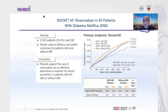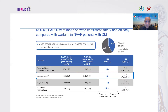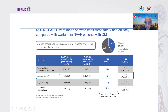Subgroup analysis from ROCKET-AF showed similar efficacy and safety outcomes in patients with and without diabetes, supporting rivaroxaban as an effective alternative to warfarin for stroke prevention in AF with or without diabetes. Looking at vascular death in ROCKET-AF, rivaroxaban showed consistent safety and efficacy compared to warfarin. Notably, vascular death was significantly reduced in favor of rivaroxaban versus warfarin, with baseline CHA2DS2-VASc score of 3.7 for diabetic and 3.3 for non-diabetic patients.